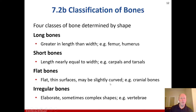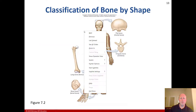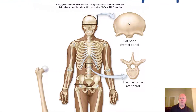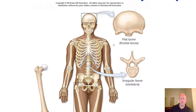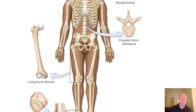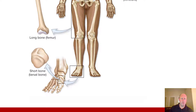Cranial bones and scapulae are examples of flat bones. Irregular bones have elaborate, sometimes complex shapes, like the vertebrae. Looking at a diagram, you can see a flat bone such as the frontal bone of the skull, irregular bones like the vertebrae, long bones like the femur, and short bones like the tarsals of the feet.